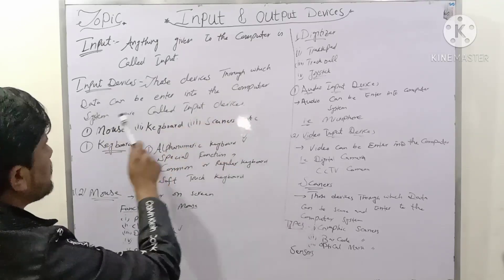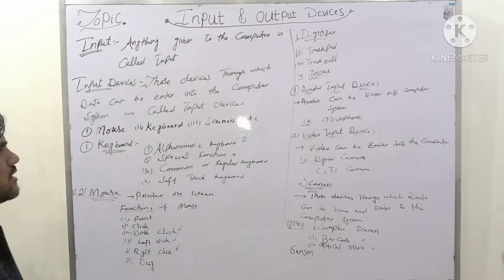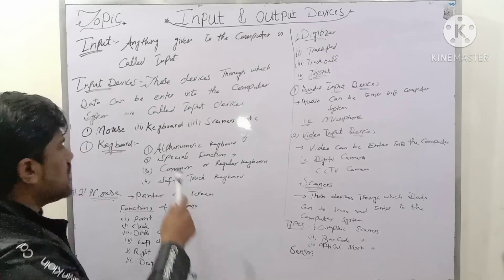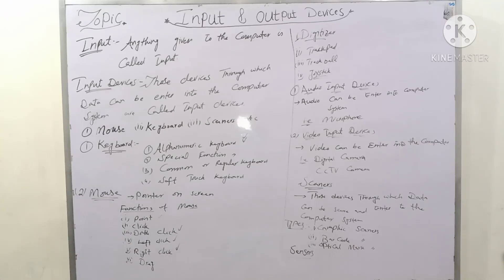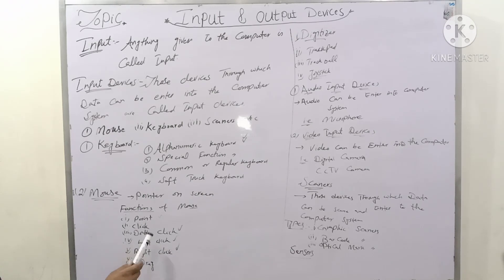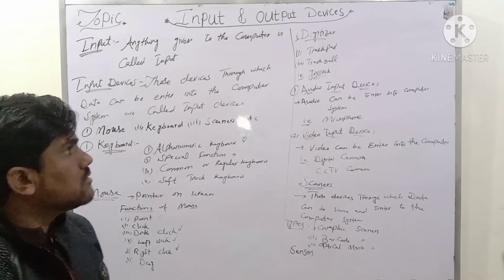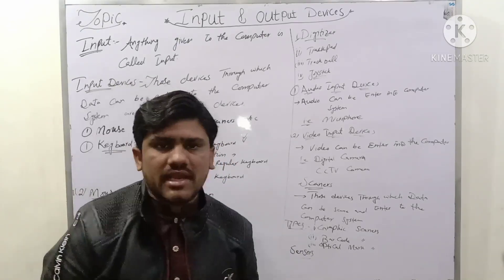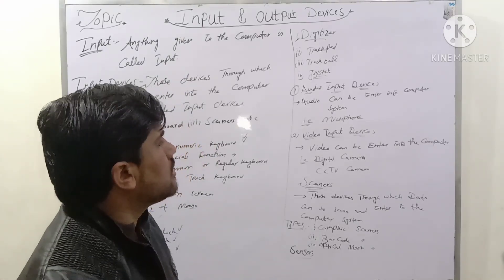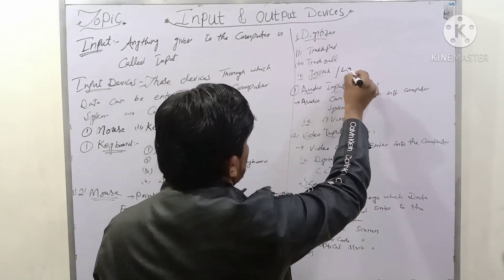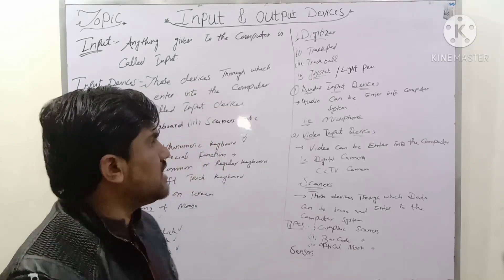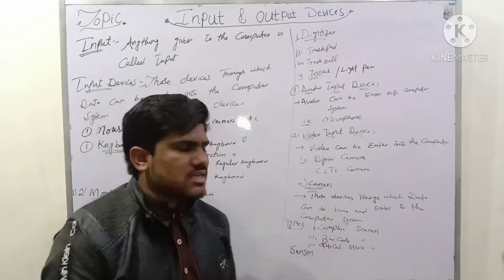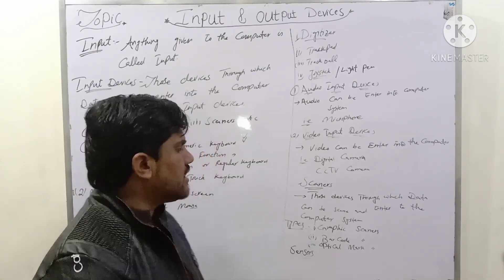To summarize: anything given to the computer is called input. Input devices are those devices through which data can be entered into the computer system — mouse, keyboard, scanners, trackball, trackpad, joystick, light pen, microphone, digital cameras, and CCTV cameras.